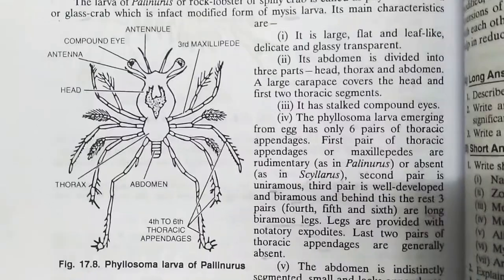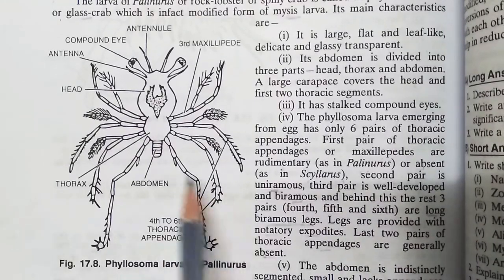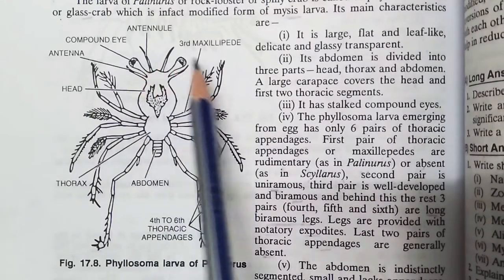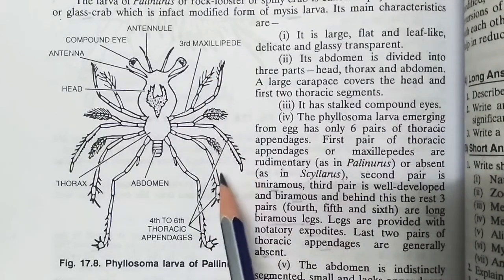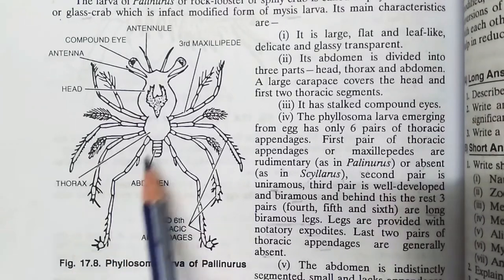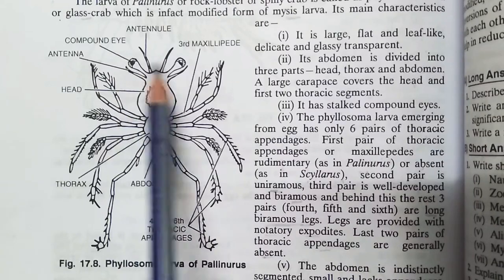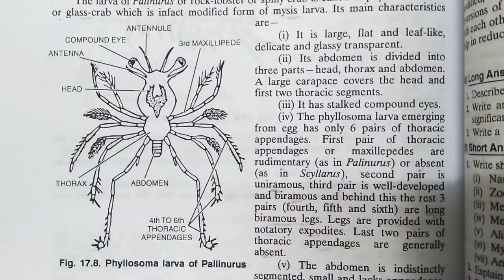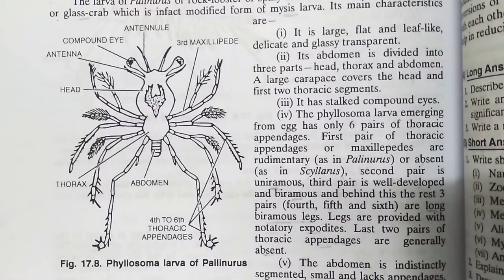Now let's see the diagram of the Phylosoma larva of Palinurus. In the diagram we can see: the antennule, the third maxillipede, the 4th to 6th thoracic appendages, the thorax, the head, the antenna, and the two compound eyes. This is the diagram of Phylosoma. Now let's see the last larva, which is Elema.